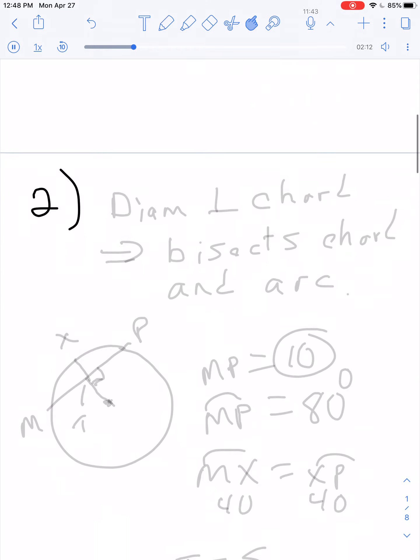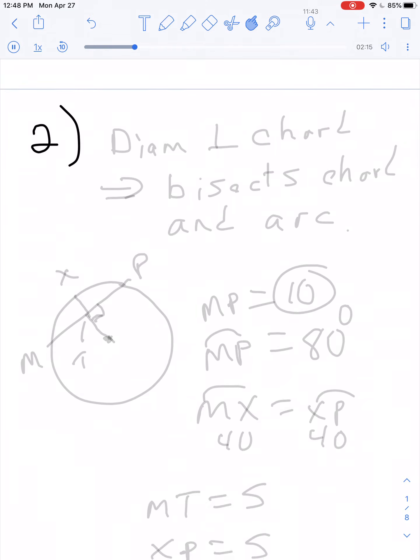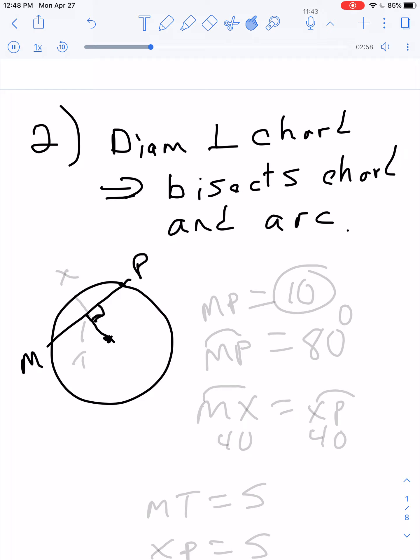Rule 2 is this. If a diameter is perpendicular to a chord, then it bisects chord and arc. Example. Here's a chord. Here's the center. If this is perpendicular, and that's not a full diameter, just a part, but any little piece that comes from the center that's perpendicular to it, it would bisect this arc.